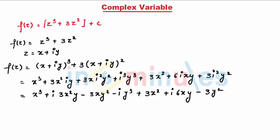We will separate the real terms. So u = x³ - 3xy² + 3x² - 3y². Terms with i give v, so v = 3x²y - y³ + 6xy.